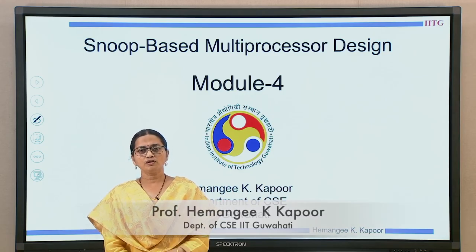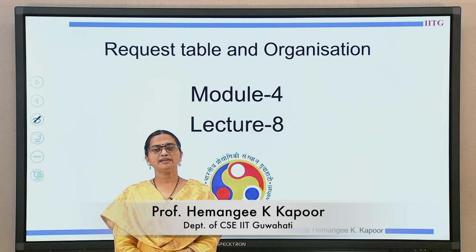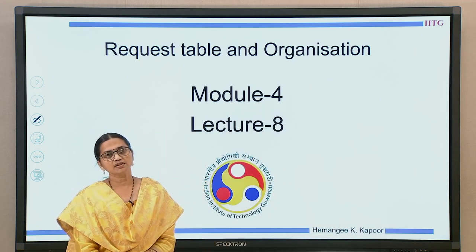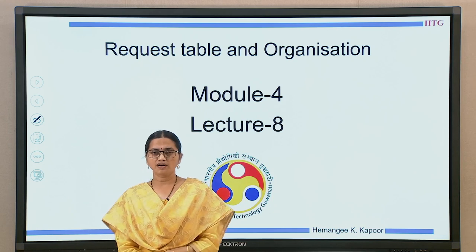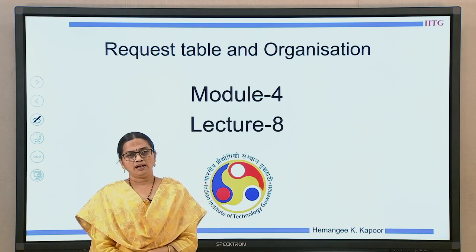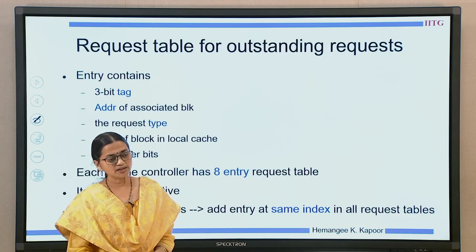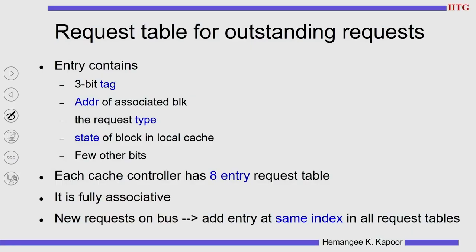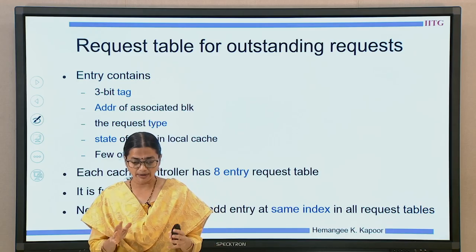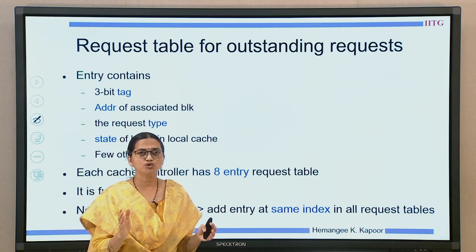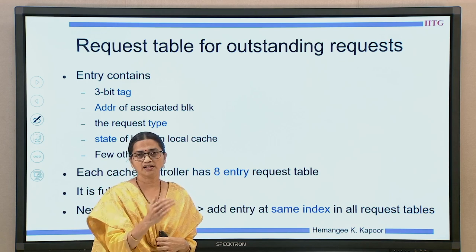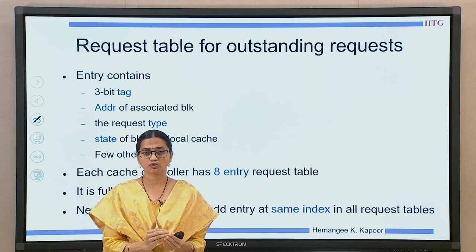Hello everyone. We are doing module 4 on snoop-based multiprocessor design. This is lecture number 8 where we are going to discuss the request table and the organization of the bus. We are continuing the topic of split transaction bus, and in the split transaction bus there will be several outstanding requests. In any design there could be 8 to 16 requests which are pending at a time, and hence we need to store them somewhere. We also need a data structure to identify what all things we need related to a request.